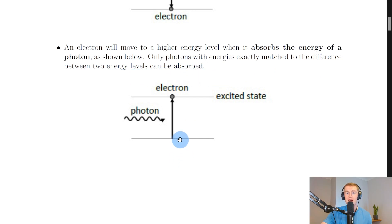What we mean by that is in order for an electron to move from a lower energy level to a higher energy level we need the photon energy to be the same as the difference between these two energy levels. Otherwise the electron won't move between the energy levels.